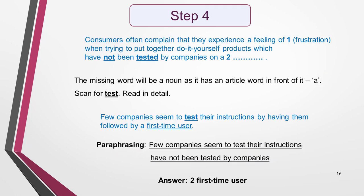The second answer comes in the same sentence in the summary as the first. I reread the sentence and choose key words in the final phrase to help me locate the matching information. I select NOT TESTED as this is the main idea. I also know that I am looking for another noun as the missing word has the article A in front of it. I scan through the text and find the word TEST in the next sentence. I read the sentence in detail to check if the information matches — it does. There is paraphrasing, but the phrase FEW COMPANIES SEEM TO TEST THEIR INSTRUCTIONS means the same as HAVE NOT BEEN TESTED BY COMPANIES. I now just need to find the words that tell me who the product has not been tested on, and I easily identify this to be FIRST TIME USERS. I have my second answer.